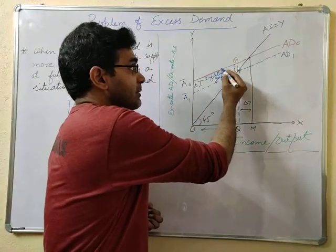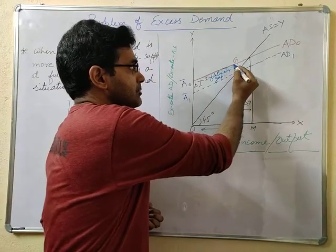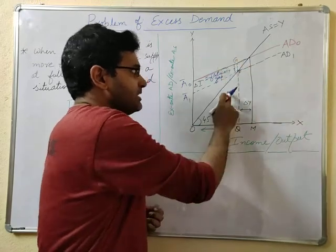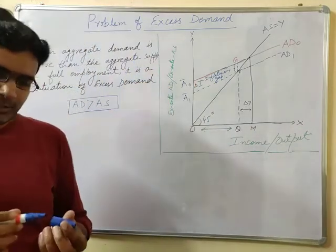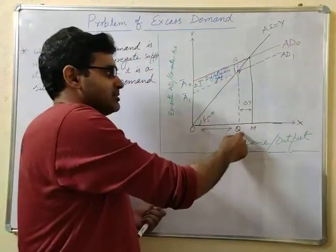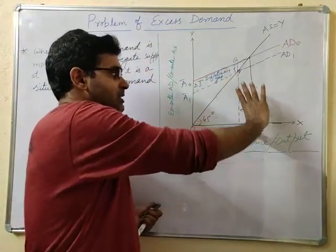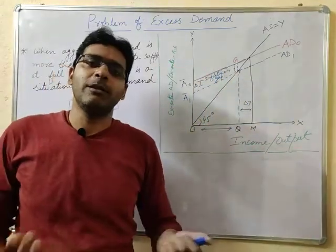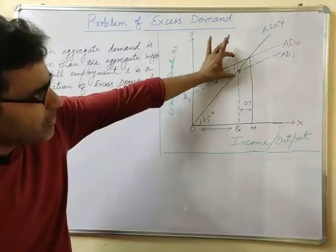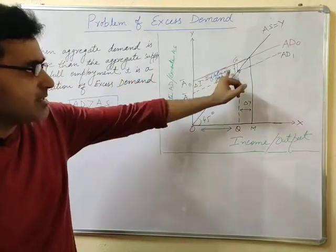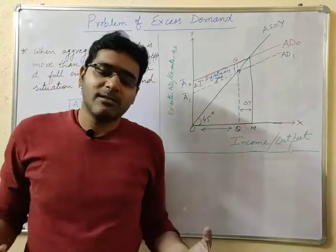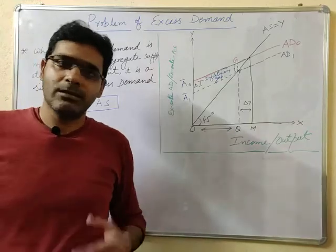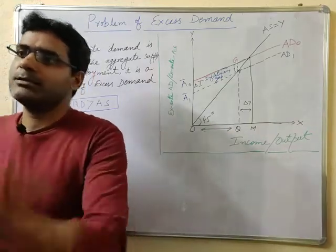We see that aggregate demand is higher — it is operating at G, so the GF amount is more than the required FQ. Aggregate demand is GQ while only FQ is required for full employment equilibrium. The amount equal to GF is creating the inflationary gap and hence the inflationary pressure over the economy, which will lead to a rise in the general price level.